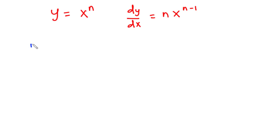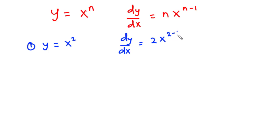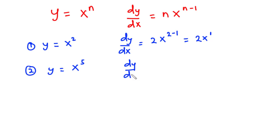Given a function y is equal to x squared, then the derivative of y with respect to x is: you drop down the 2, you maintain x, and then you reduce the exponent by 1. So this is equal to 2x exponent 1. If you have a function y is equal to x exponent 5, then dy/dx is equal to 5 times x exponent 4.